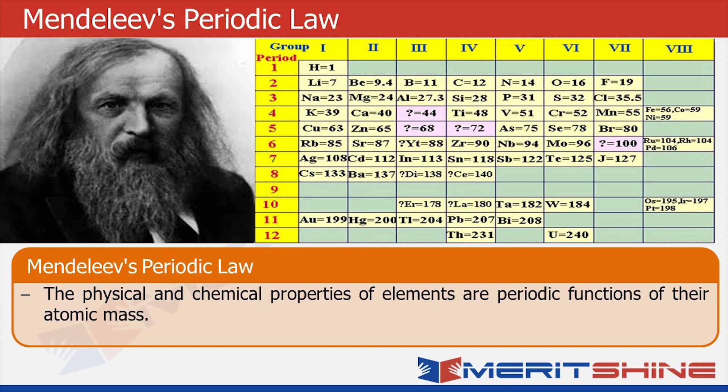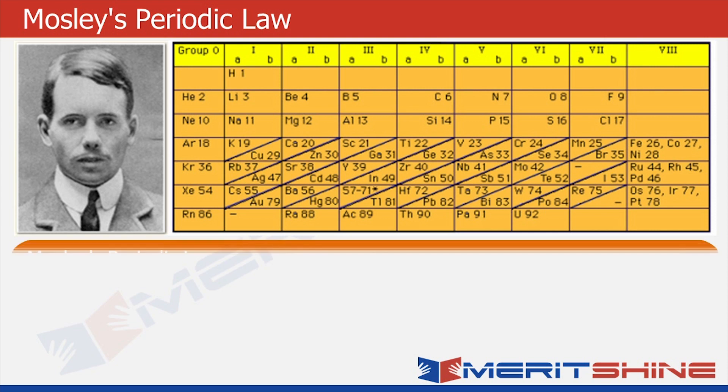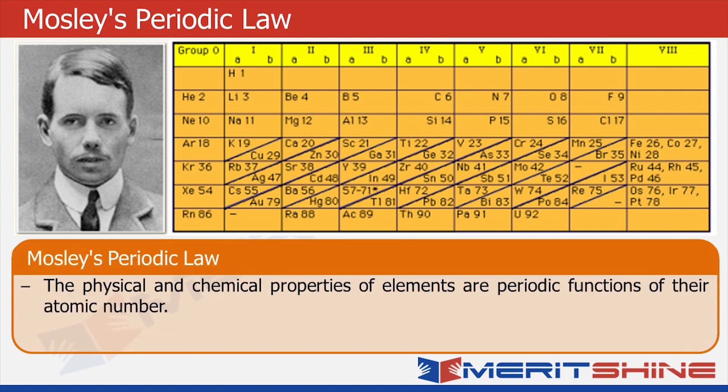And finally, modern periodic law was given by Moseley. According to Moseley, the physical and chemical properties of the elements are periodic function of their atomic numbers. So there is just one difference between Moseley's law and Mendeleev's law. Mendeleev tried to arrange the elements on the basis of their atomic weight, whereas Moseley tried to arrange them on basis of their atomic number.